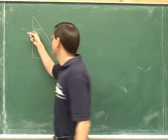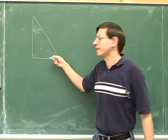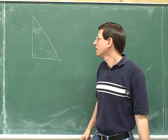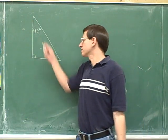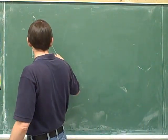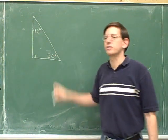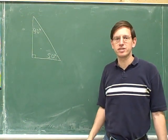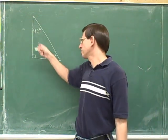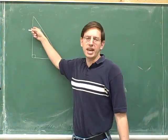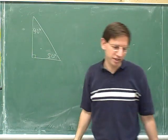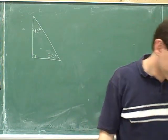If this angle is 40 degrees, how big is this one? Well, 90 minus 40 is 50. So if this is 40, this would have to be 50 degrees. So if I tell you this angle, it should be easy to find the angle on the top. And if I tell you the angle on the top, it should be easy to find the angle on the bottom.